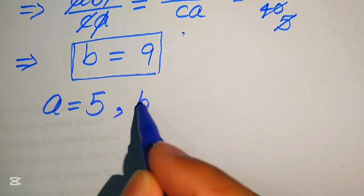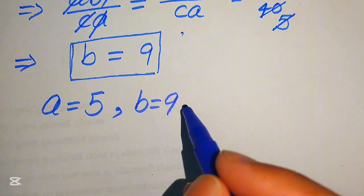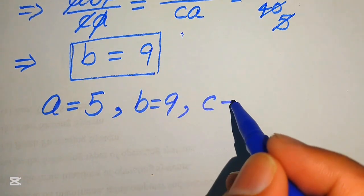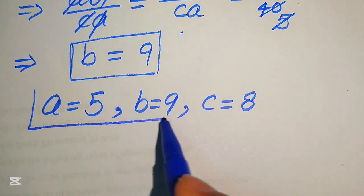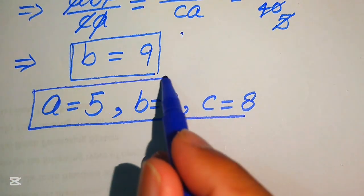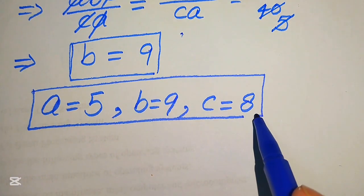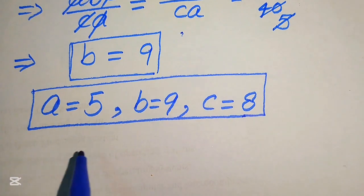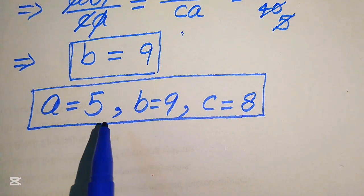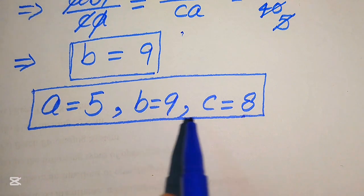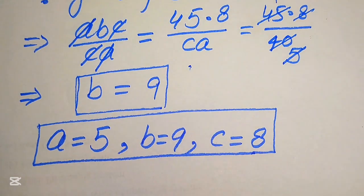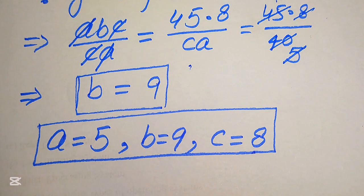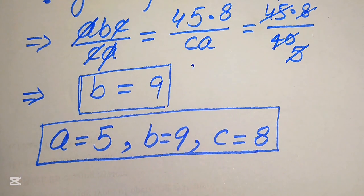Finally, we have A = 5, B = 9, and C = 8. These are the three values of A, B, and C, and since they are all positive real numbers, the given condition is satisfied. This is our final answer. Thank you so much for watching this video — please subscribe to my channel for more exciting videos.